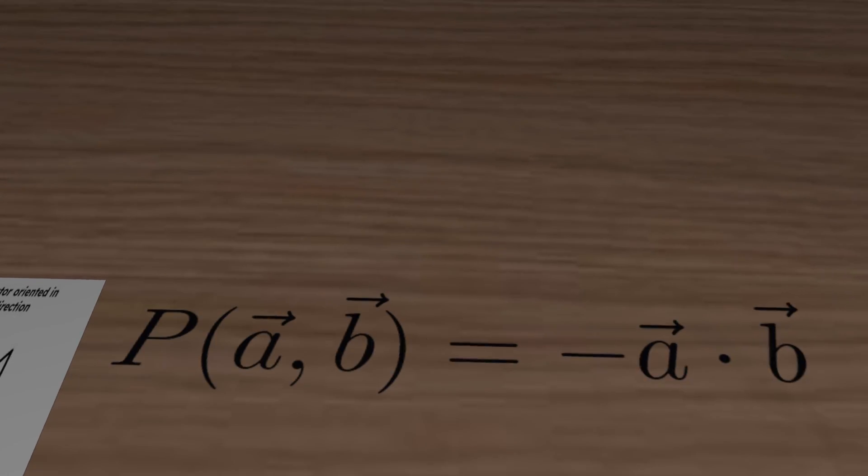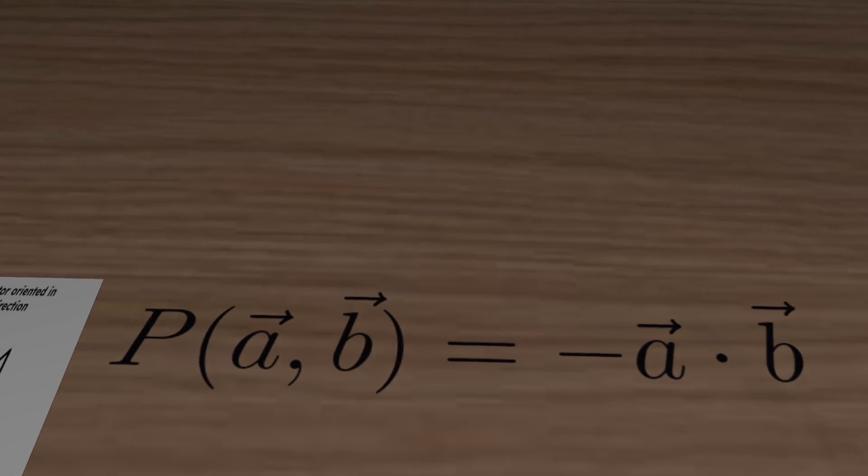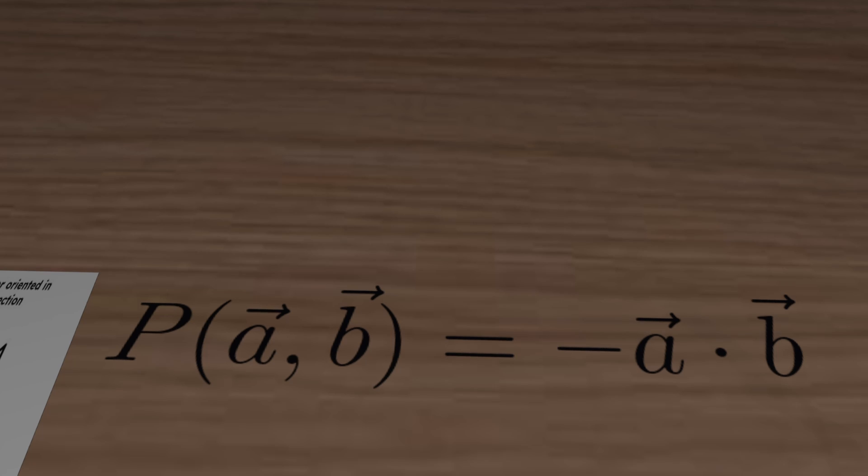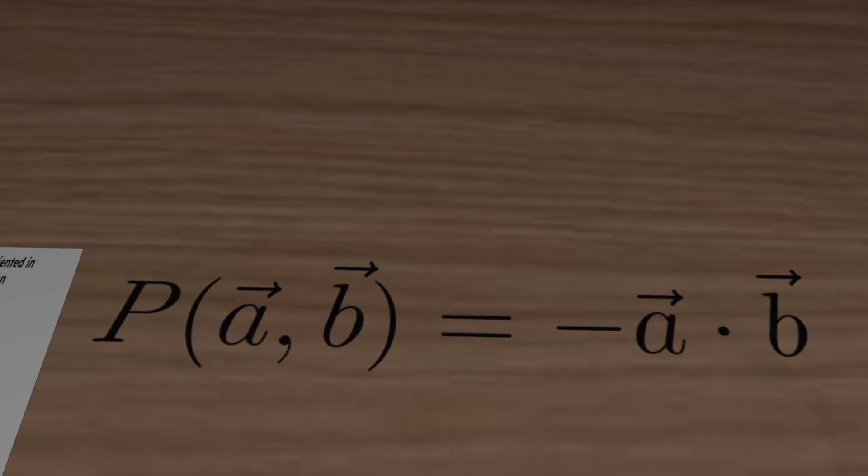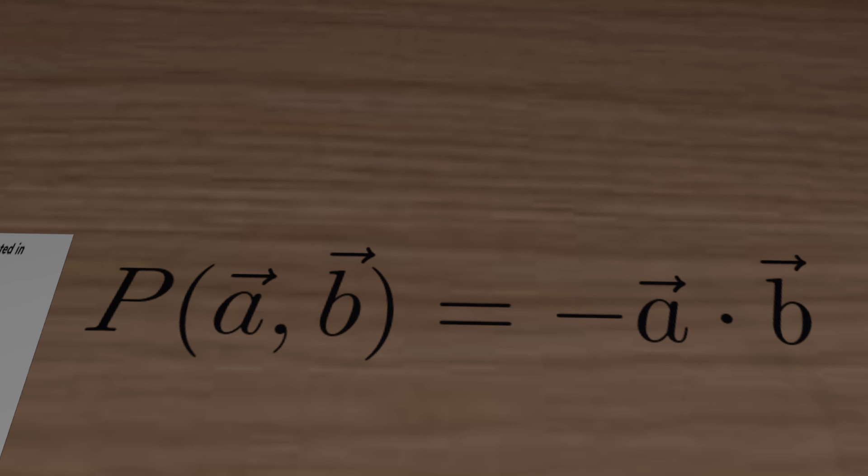Now introduce the correlation between the two detectors, P of A and B is equal to minus A dot B, for arbitrary orientations of A and B. This is exactly what quantum mechanics predicts the outcome of the experiment to be.